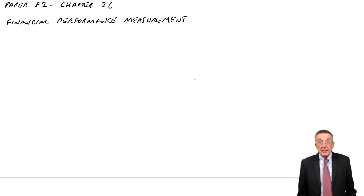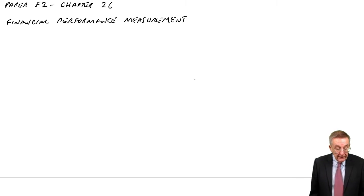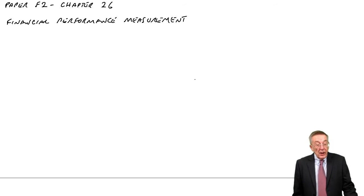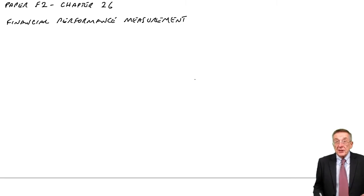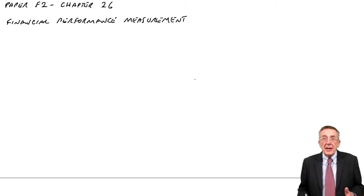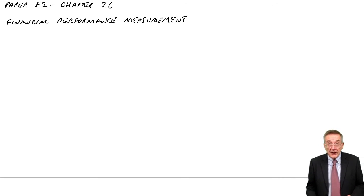You can see in the profit statement that the final profit after taxation this year, 2007, is 478, last year 266. The purpose of financial performance measurement is to look at various aspects to see if the company appears to be doing better or doing worse.